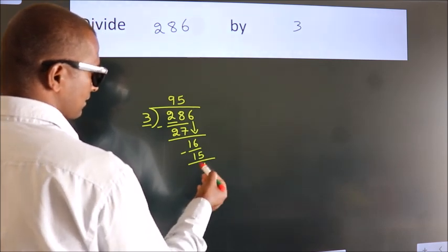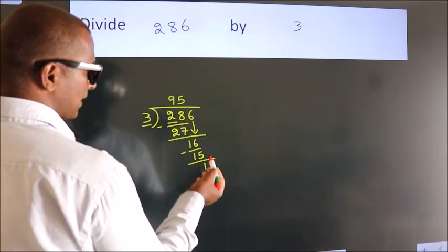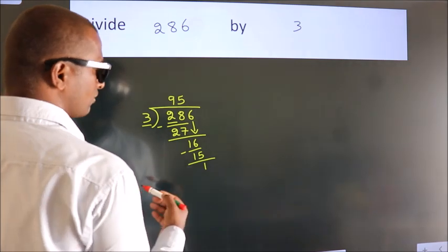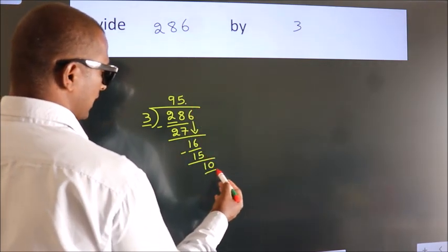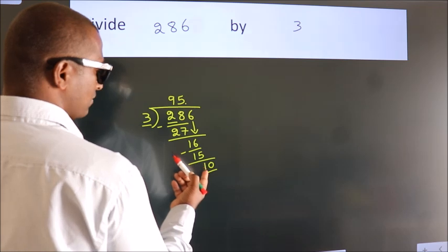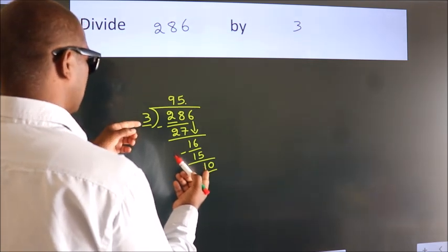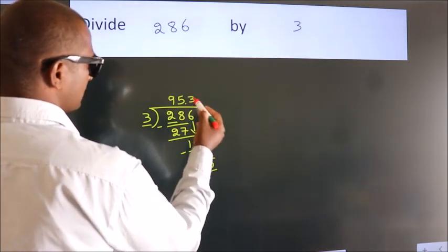After this, no more numbers to bring it down. So what we do is we put dot, take 0. So 10. A number close to 10 in the 3 table is 3 threes, 9.